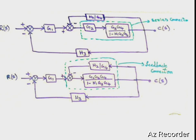Now there is no feedback — only one block remains, and that block is again in series with G2. So I am applying the series connection formula, which means the product of these two transfer functions: G2 multiplied by G3·G4/(1 − H1·G3·G4).